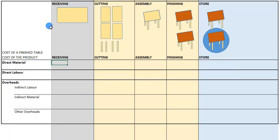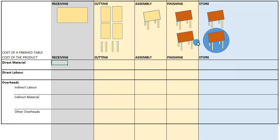We're going to assume that we are still making tables. We can see the process: the wood comes into the receiving division, we cut up the wood, put it all together, add some varnish, and finally package the tables into polystyrene and boxes. The question we're trying to answer is: what is the cost that goes into making one of these finished tables?